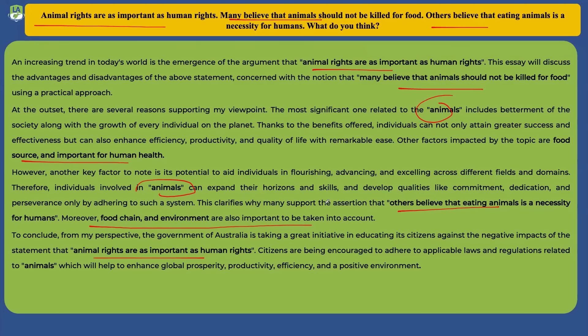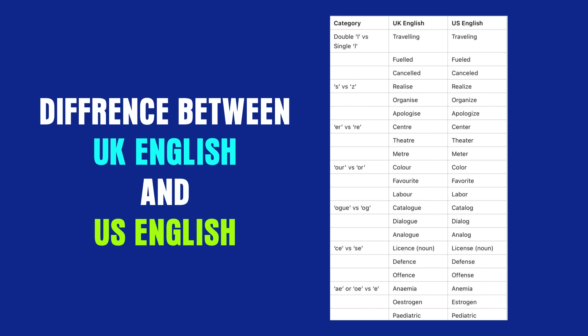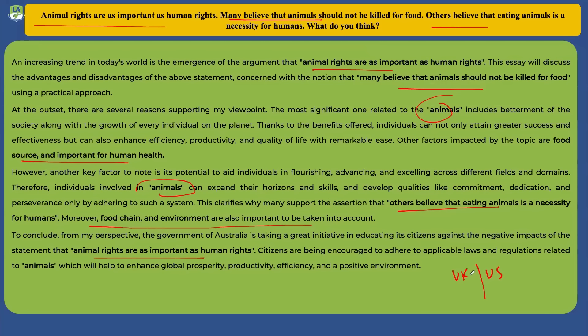If you get an essay topic with two statements, put the first statement in the first blank and the second statement in the second blank — you've already covered all keywords from the essay topic in the first paragraph. For three statements, add the first, second, and third statements, then repeat the first statement again, with three keywords in the relevant slots. Also be careful about UK vs US English — PTE allows both but you must not mix them within one question.